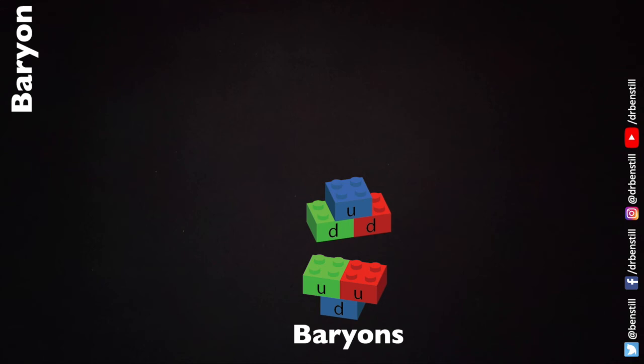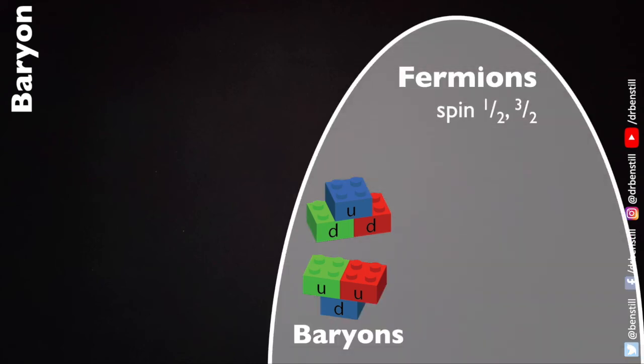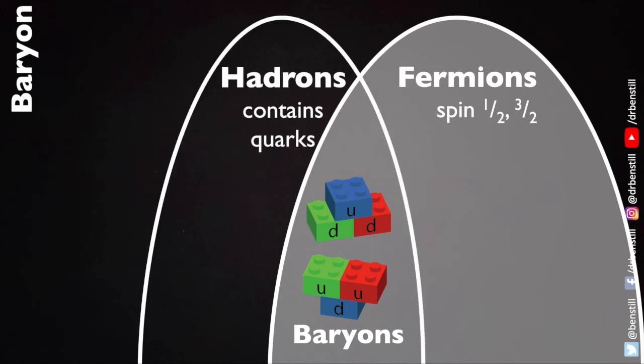Baryons take their place within the wider definition of other particles in that they are both fermions in that they have a spin a half or three over two and that they are hadrons because they contain quarks.